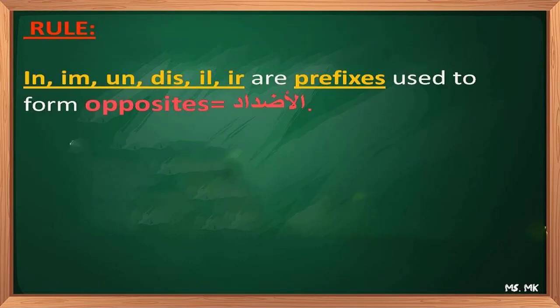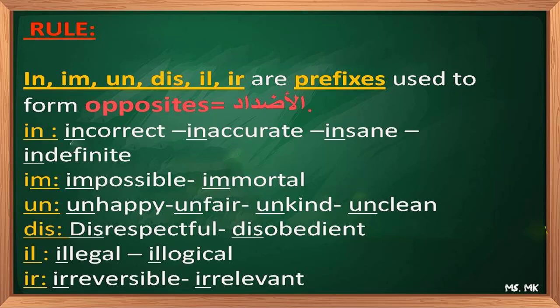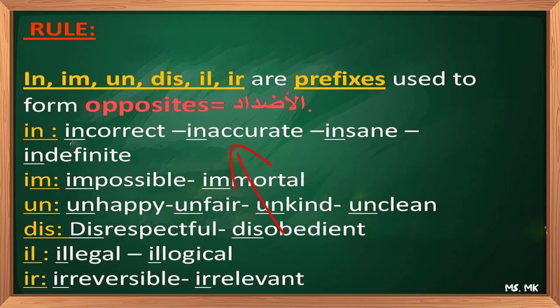In the rule, IN, IM, UN, DIS, IL, and IR are prefixes used to form opposites. For IN: incorrect, inaccurate, insane — words starting with C, A, or S take IN. For IM: words starting with P or M take IM, like impatient, immature. For UN: unhappy, unfair, unkind — these words take UN. For DIS: we add DIS to words like 'organized' to get 'disorganized.'